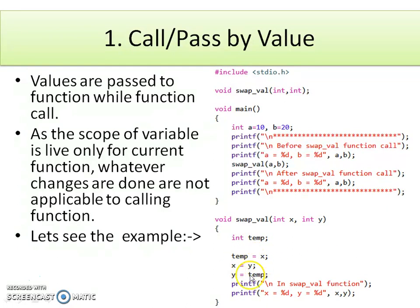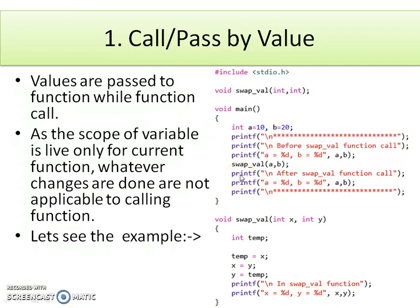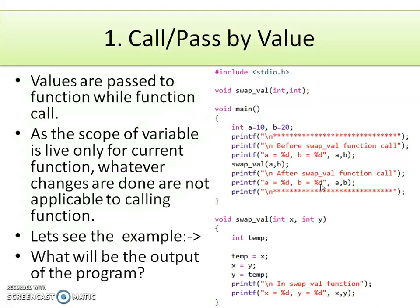We make changes to the formal arguments x and y by swapping their values. Inside the swap function we display x and y, then return to the calling main function. After swapVal execution, we check the values of a and b again. Now let's check what the output of the program will be.